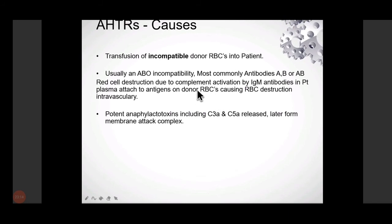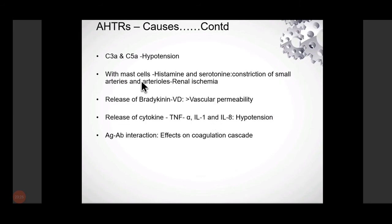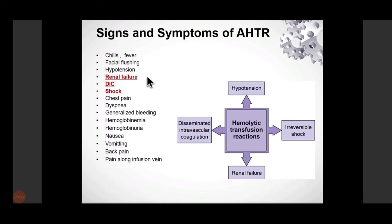Causes: incompatible donor RBCs entering the patient, most commonly due to ABO incompatibility. The complement cascade releases C3a and C5a causing hypotension. Mast cells release histamine and serotonin, causing renal vessel ischemia. Bradykinin increases vascular permeability. Cytokines cause hypotension. Antigen-antibody interactions activate the coagulation cascade. All these result in DIC and renal failure. The main signs are renal failure, DIC, and shock.